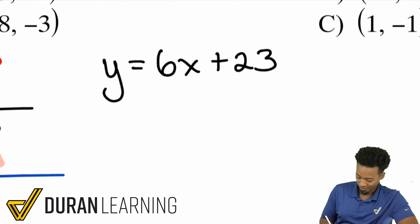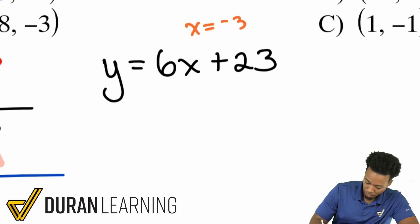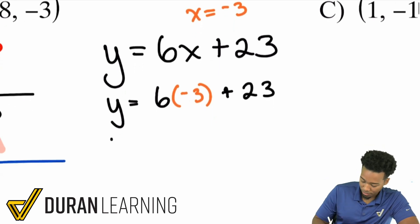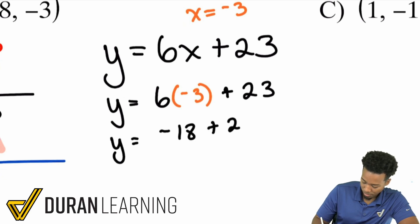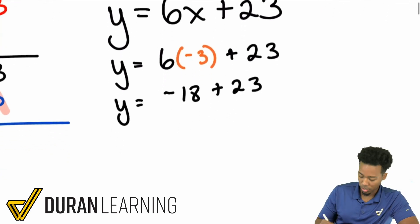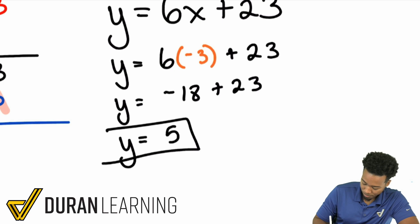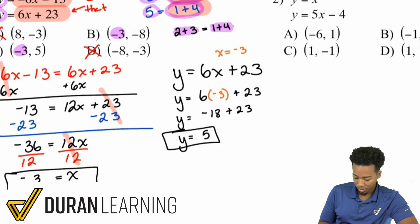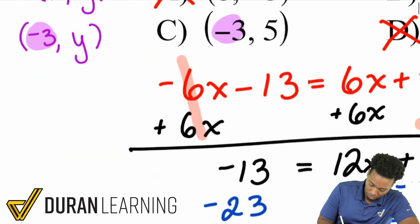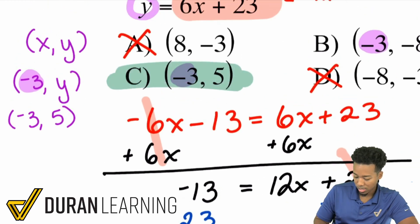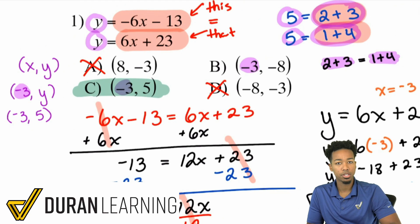Plugging x equals negative 3 into y equals 6x plus 23: y equals 6 times negative 3 plus 23, which is negative 18 plus 23, giving y equals positive 5. So the answer is the coordinate (negative 3, positive 5), which is answer choice C.